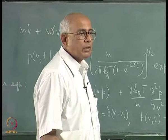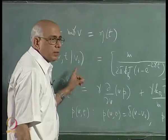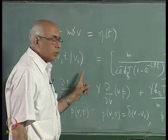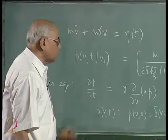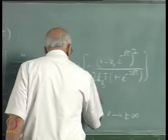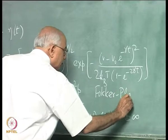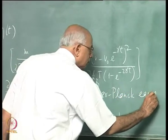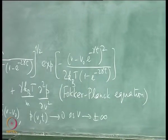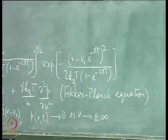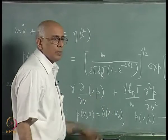One can prove this rigorously and solve this equation explicitly by a variety of methods. This is where the Ornstein-Uhlenbeck distribution appears from this particular equation — the master equation for the conditional density. This equation is the first example of what is called a Fokker-Planck equation, a class of equations for a specific kind of Markov process.